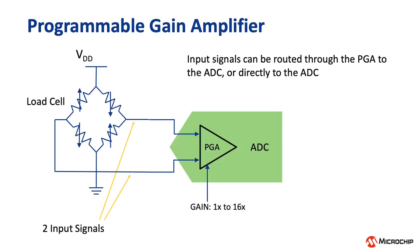This is where the PGA comes into play, as it can be set to amplify the signal before the signal is sampled by the ADC. Performing this sort of signal conditioning on chip provides an elegant solution for reducing system size and cost. It also means that you can add a bunch of other functions to your system in the future as you want to add more features.